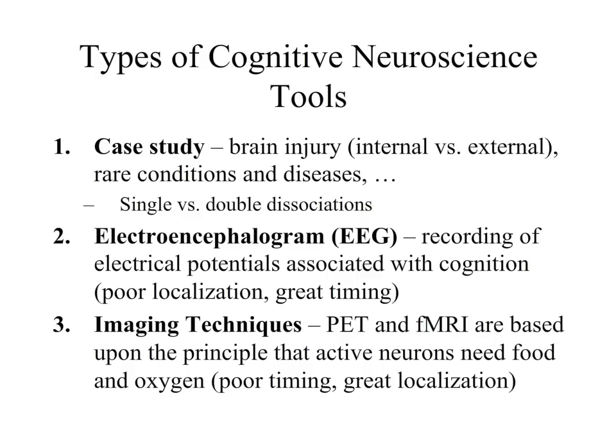Let's look at three cognitive neuroscience methods. First, the case study, where we might examine the relationship between a particular cognitive process and brain injury. We often compare people who have a particular brain injury with those who don't, looking for whether there's a single or double dissociation with respect to one or two cognitive tasks.